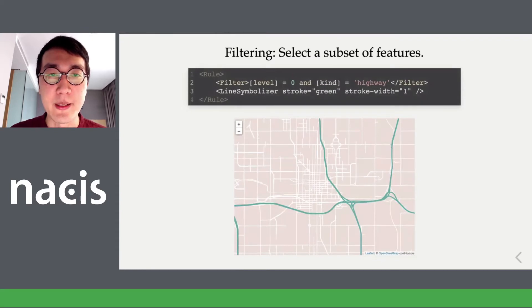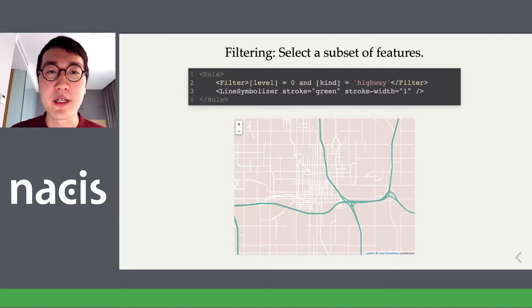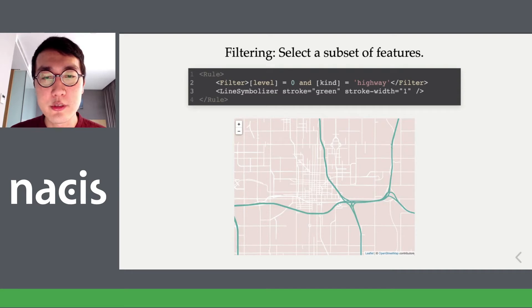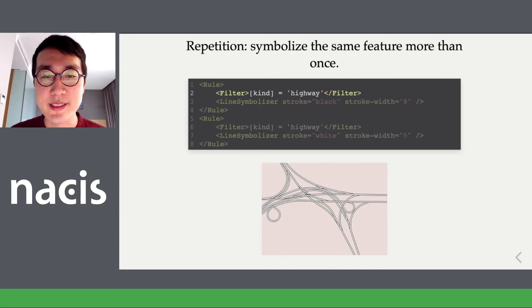Another common operation is filtering — you might want to only select one portion of the data to symbolize. You might have a line symbol with a green stroke, but only want it to apply to one class of features like highways, so you need to define a query or filter to choose only that kind of feature. Another operation is casing or a repeat of a feature, where you might have a black background stroke and then a white inner stroke to have casings on roads.